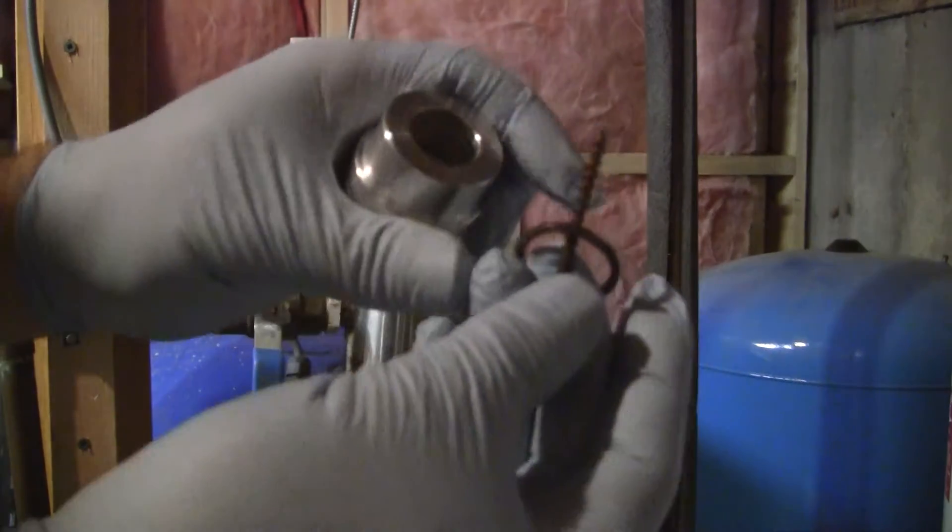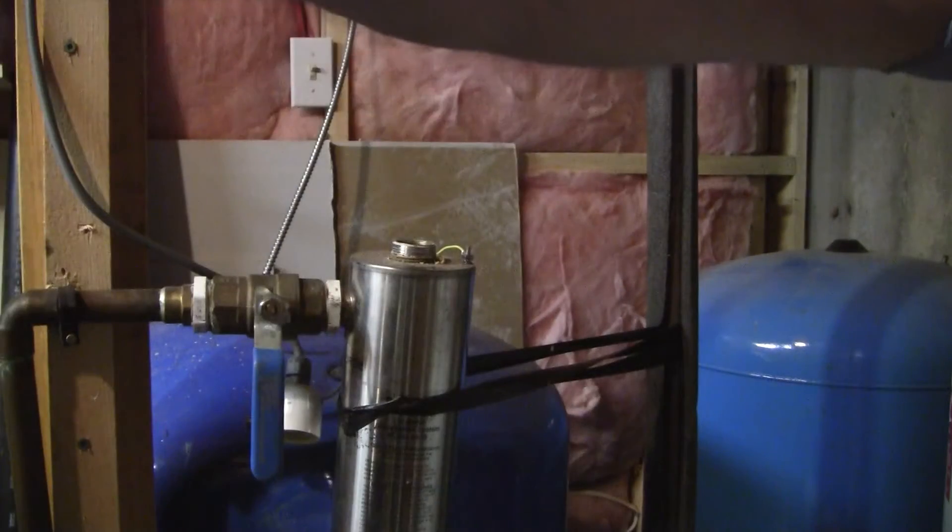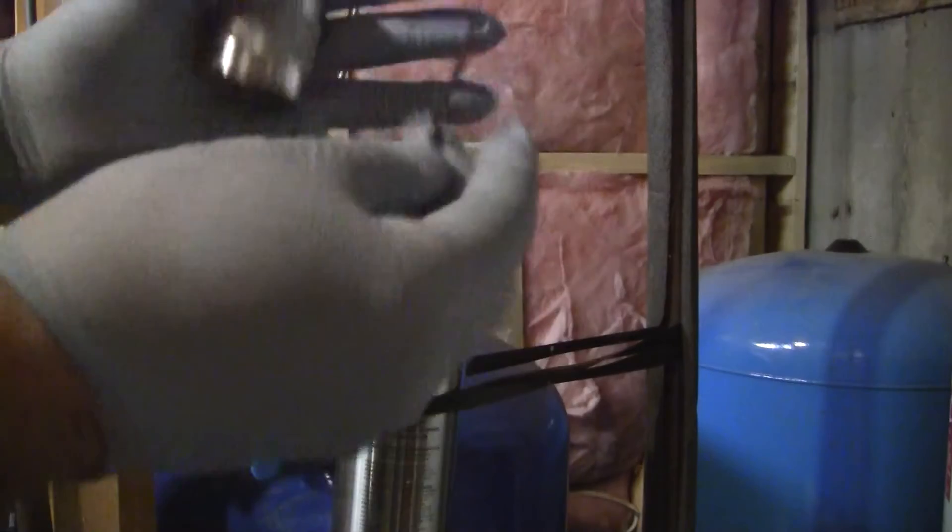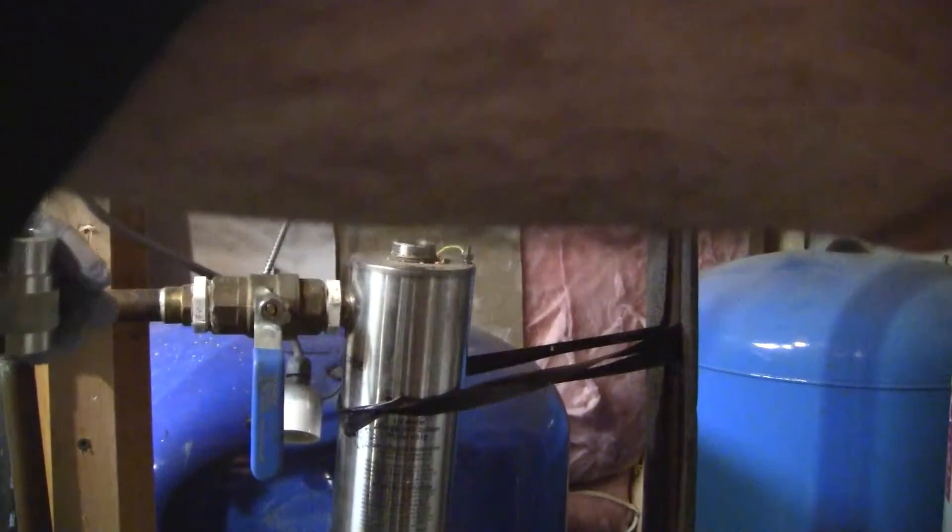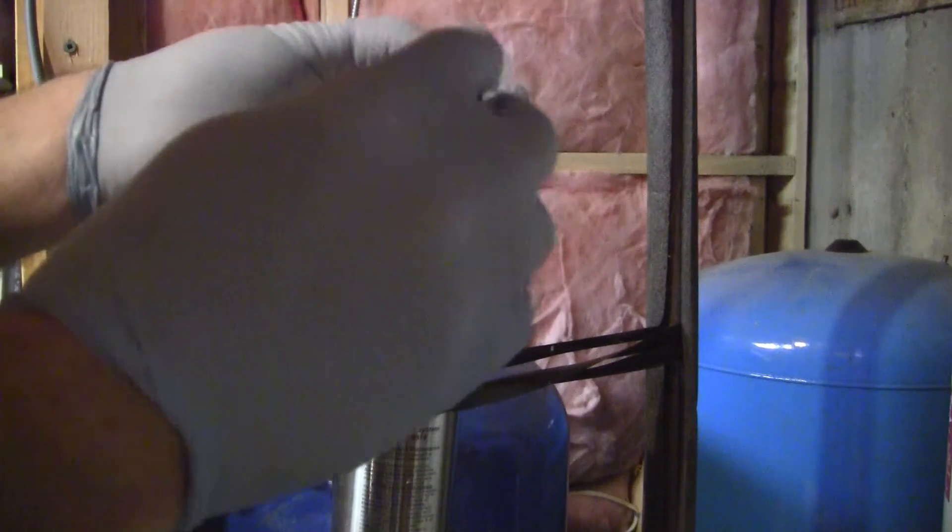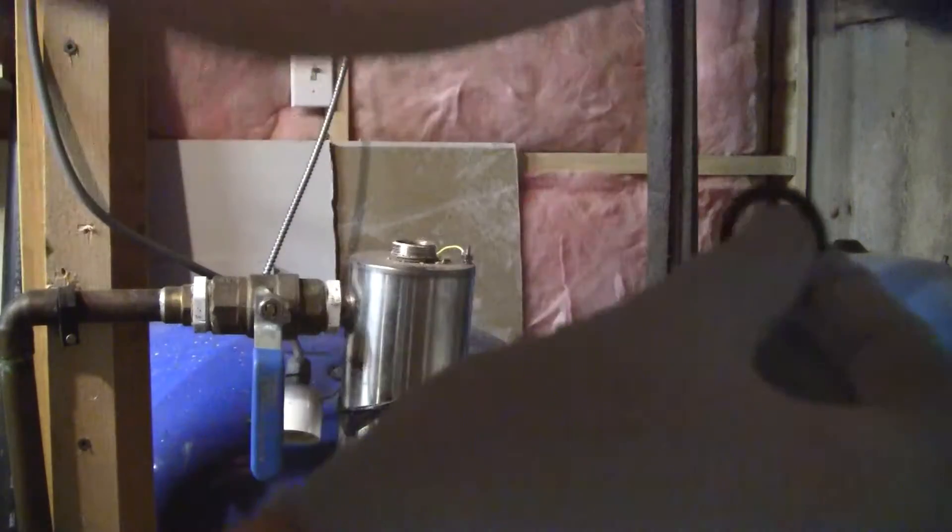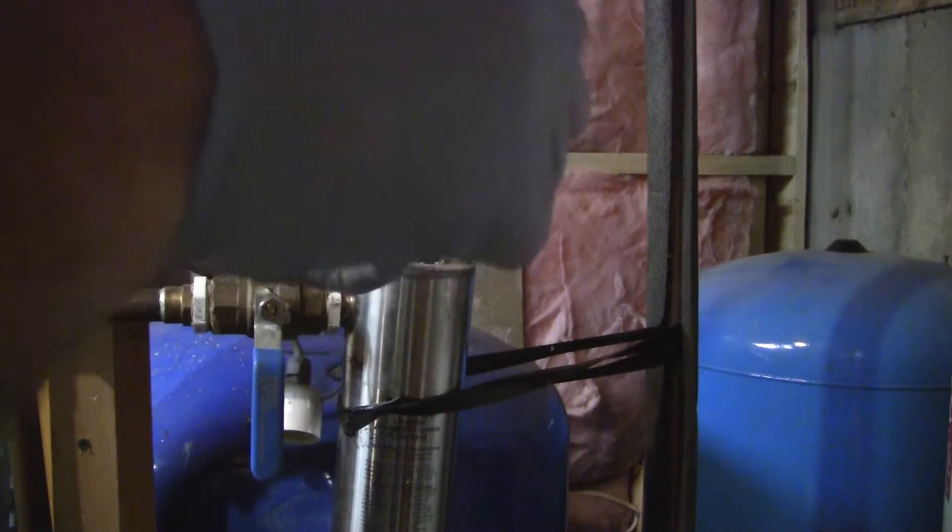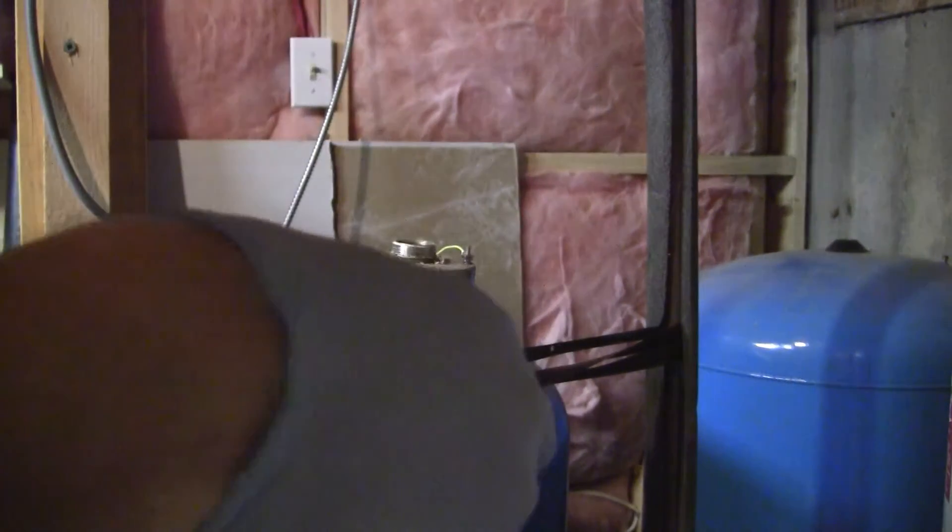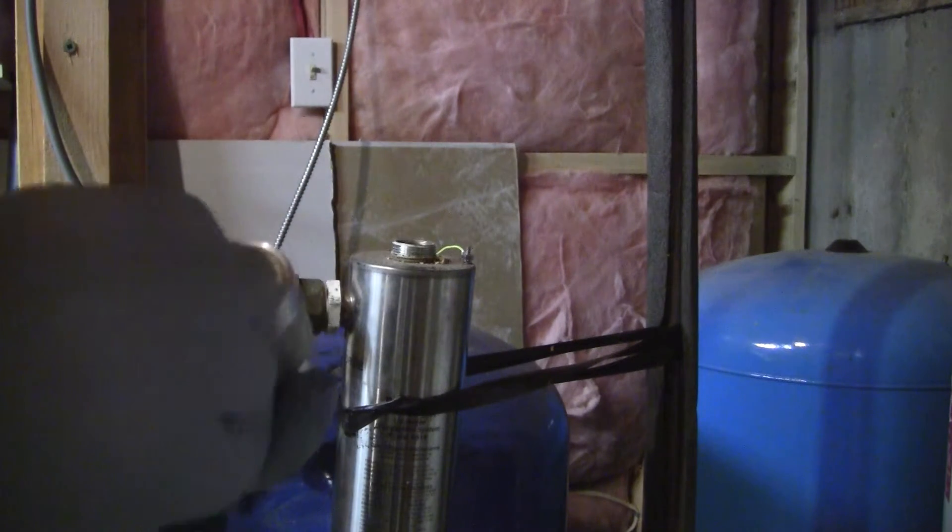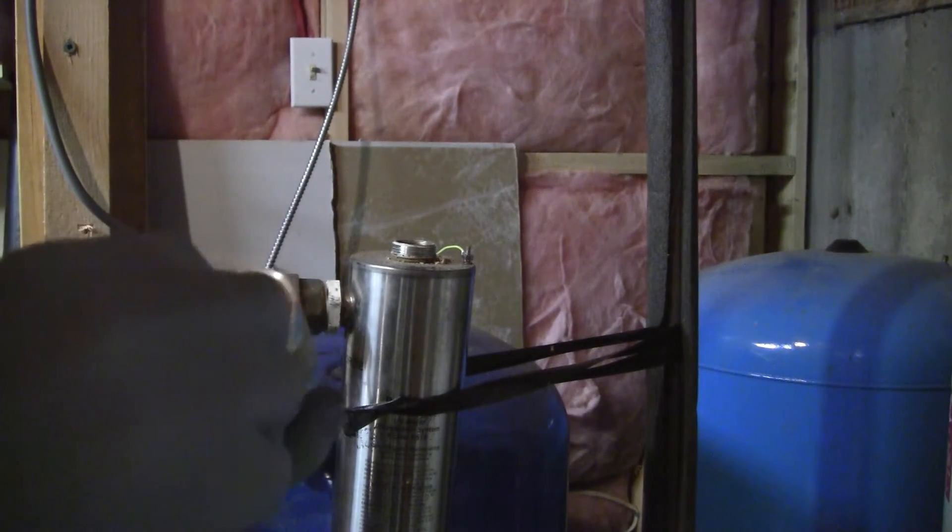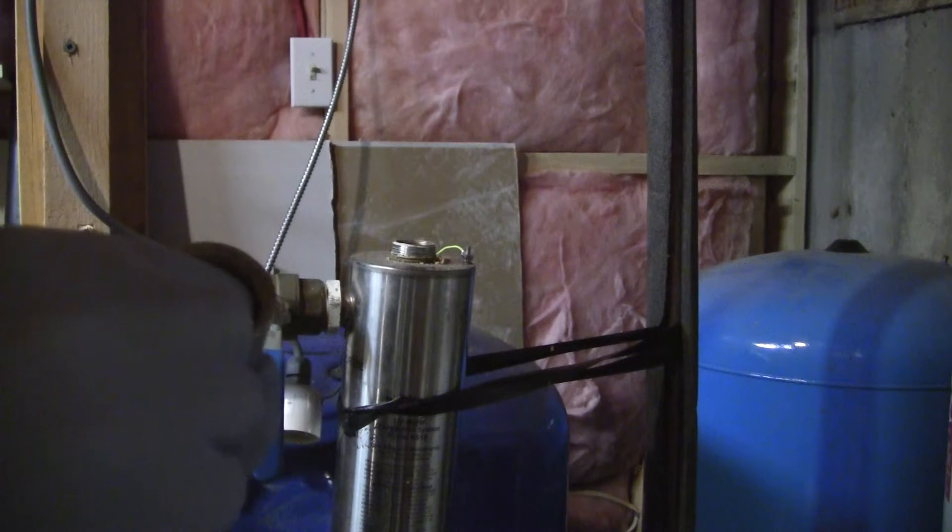I have used this little screwdriver and if you have noticed I now have these fancy surgical gloves on. The reason is you don't want to get oil, body oil or any oil on the UV bulb itself. Although there is probably oil on these O-rings, you are not supposed to get any oil on the UV bulb.